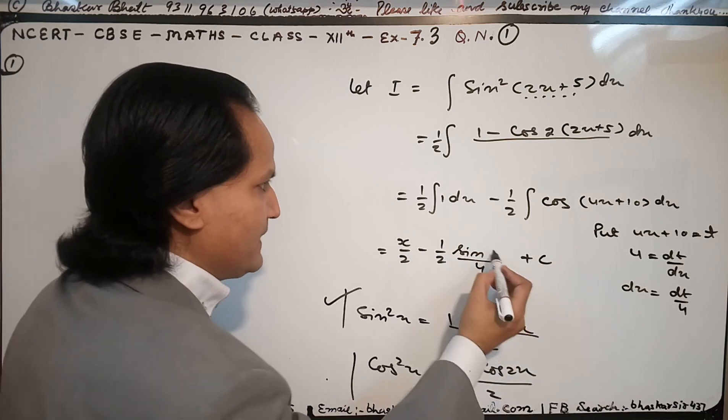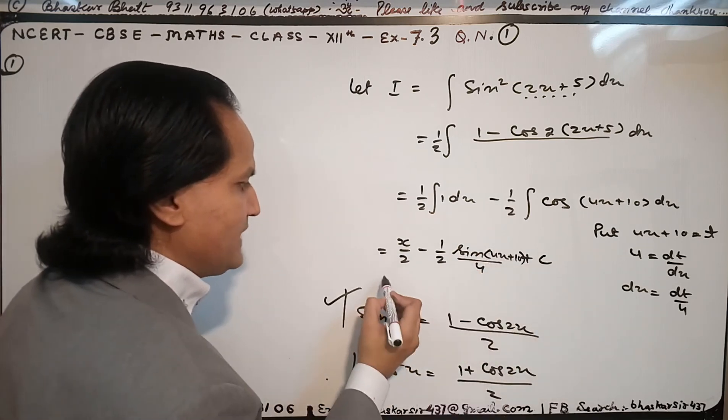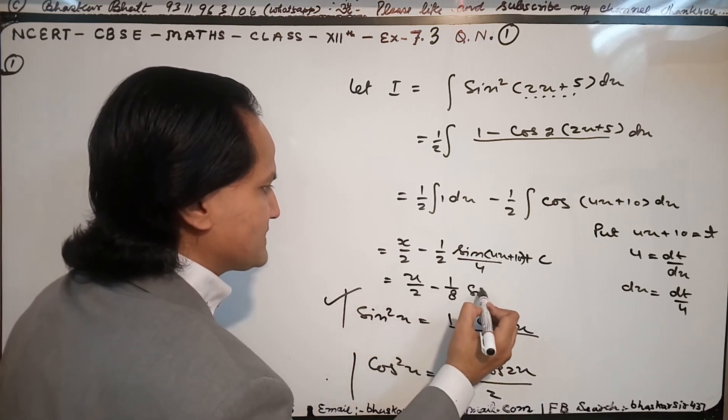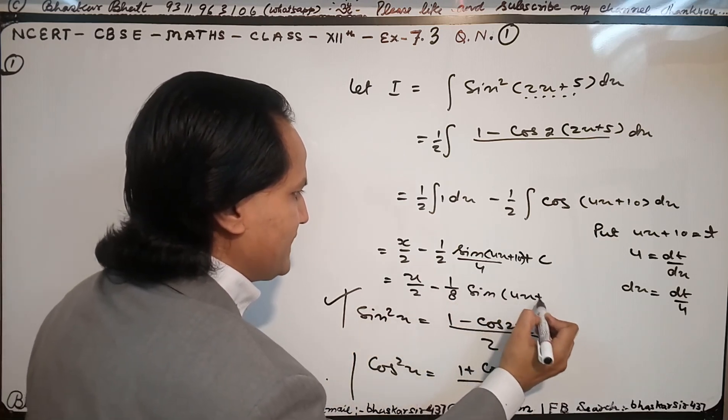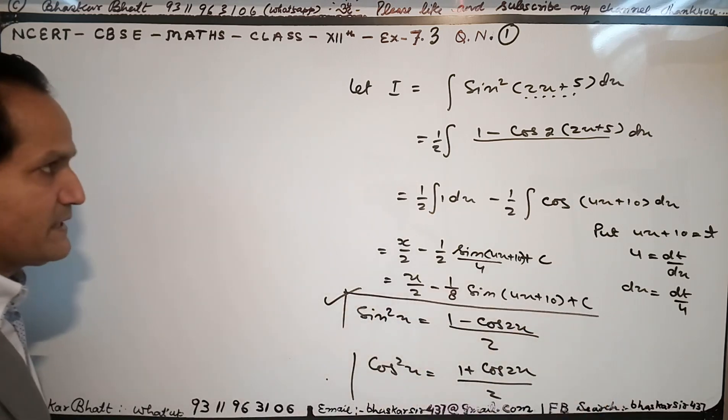So the answer will be x/2 minus (1/4)sin(4x + 10) + C. That's the required answer. Hope you enjoyed this video. Thank you.